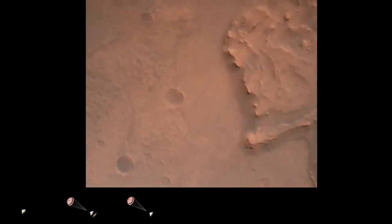Nav filter converged. Velocity solution, 3.3 meters per second. Altitude, 7.4 kilometers. Now has radar lock on the ground. Current velocity is about 100 meters per second, 6.6 kilometers above the surface.